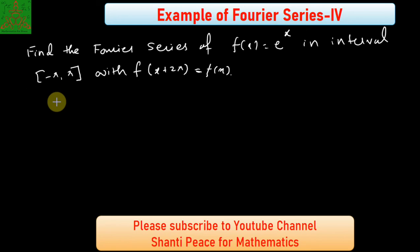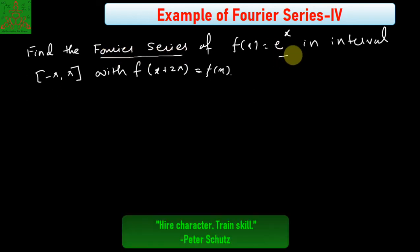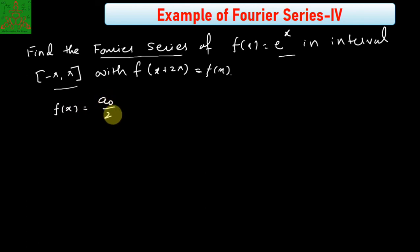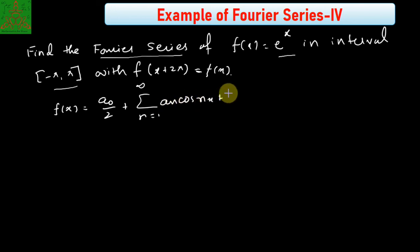Welcome to Shanti Peace for Mathematics. In this video, we are discussing the Fourier series of the function e^x in the interval minus pi to pi with periodic function. As we know, the Fourier series of f(x) is equal to a₀/2 plus summation n from 1 to infinity of aₙ cos(nx) plus bₙ sin(nx).